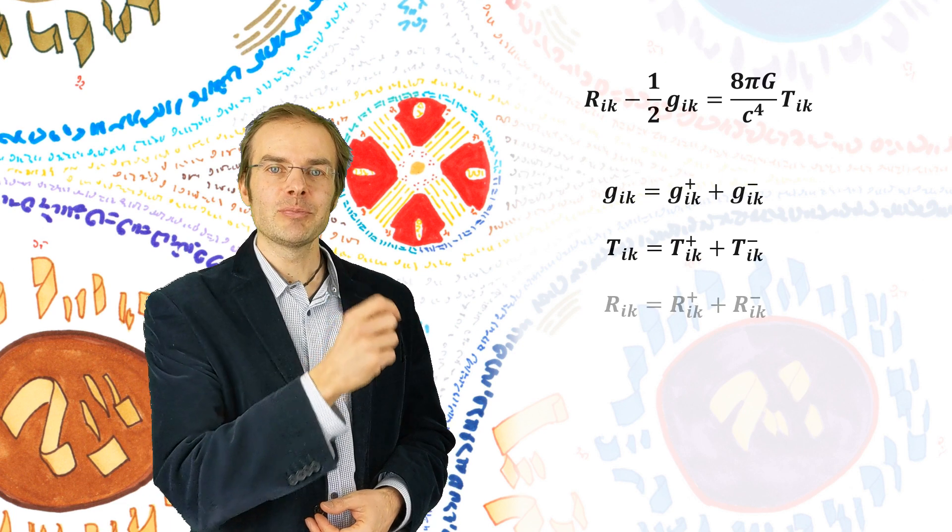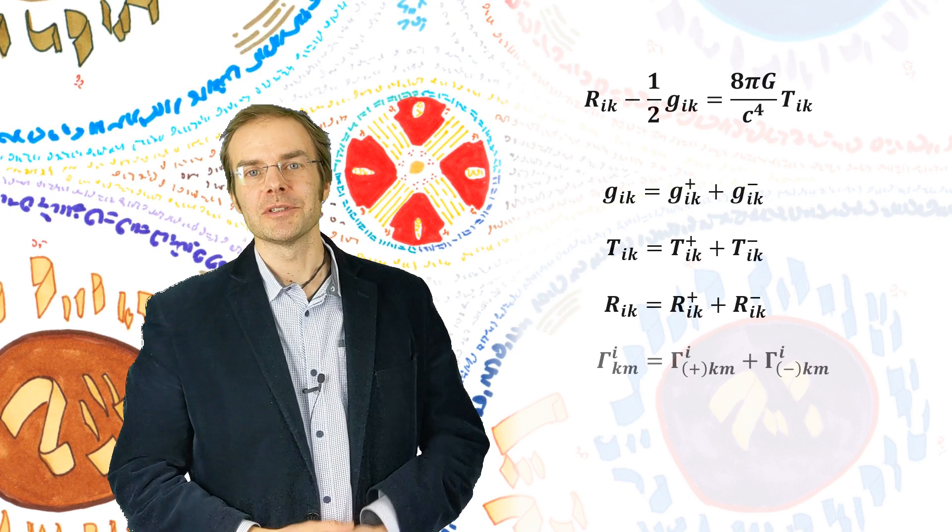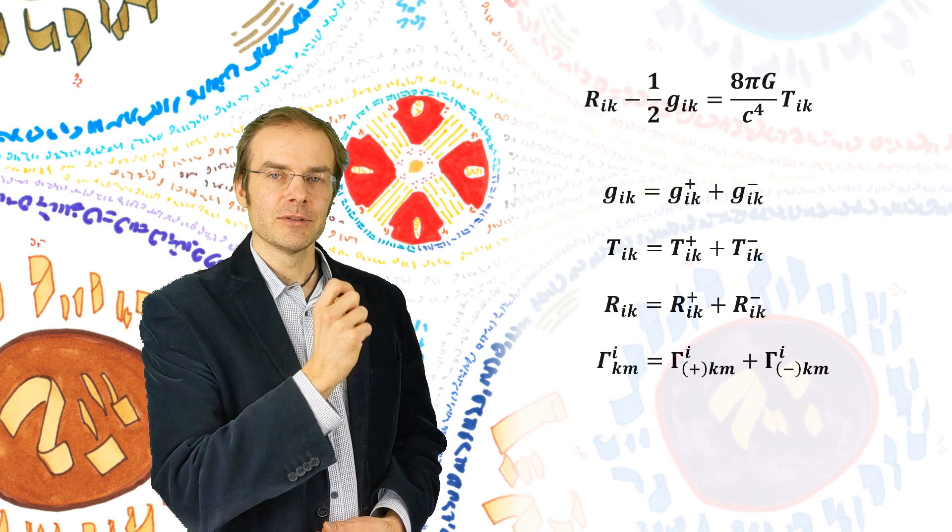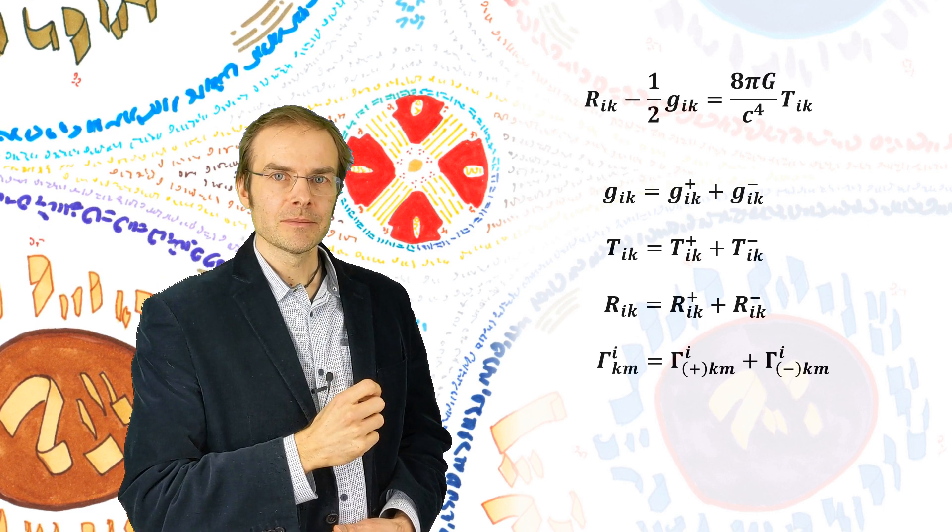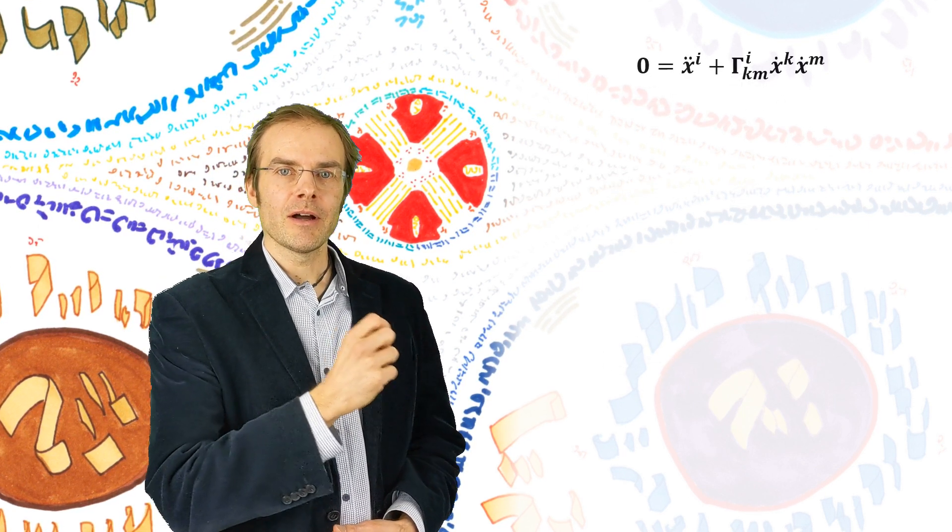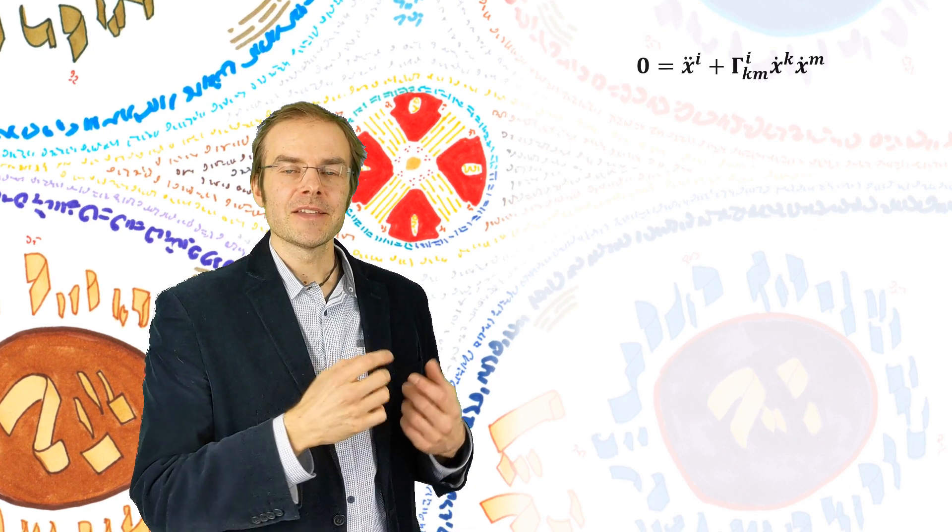And likewise, we can split the Ricci tensor and the Christoffel symbols. As the Christoffel symbols are derivatives of the metric tensor, and we are now basing everything on this generalized non-Hermitian tensor, we can regard it as a generalized potential for interaction forces, and thus for interaction of physical fields.